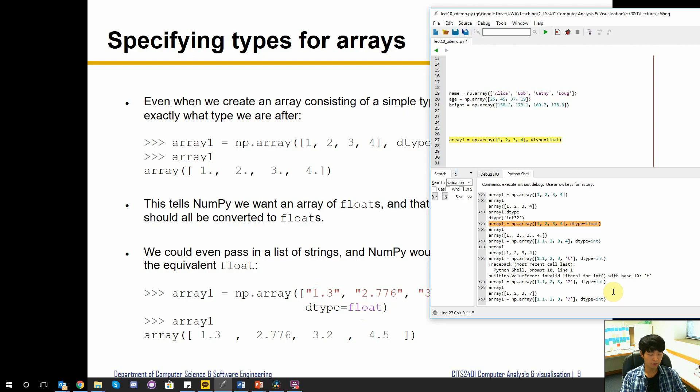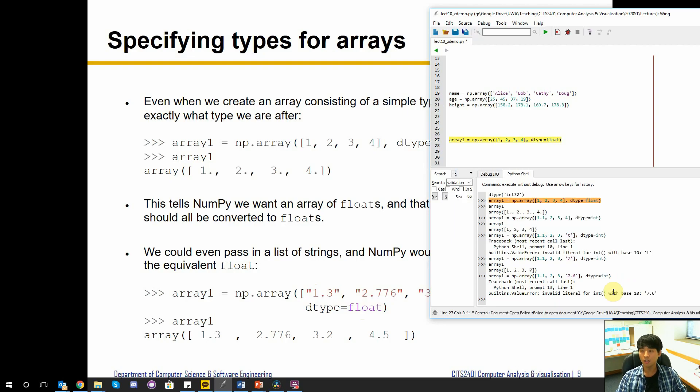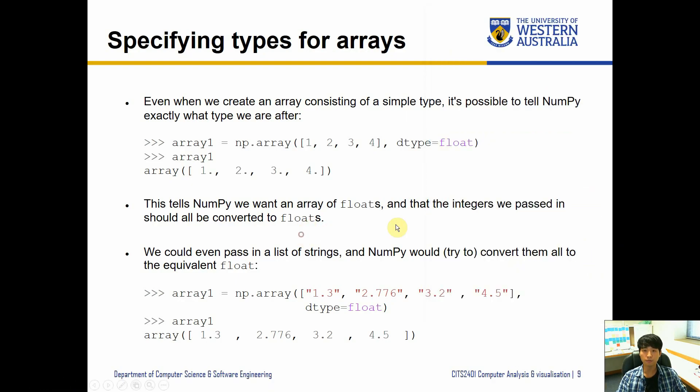We do have to be careful - for example, we may think that this might convert '7.6' into number 7.6 first and then convert into integer, removing the decimal point. But it doesn't do multi-step conversion. If you're trying to convert string '7.6' into an integer it's the same error that you'll get in Python. It only tries to do single step.